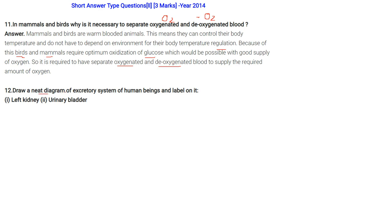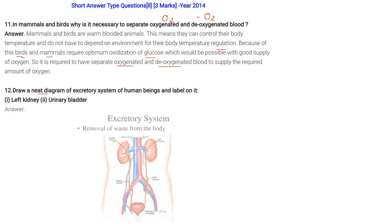Draw a diagram of the excretory system of a human being and label the left kidney and urinary bladder. This is the right kidney, left kidney, vena cava, aorta, right ureter, and left ureter. The ureters go to the urinary bladder — like a sac from where the urine will pass out.